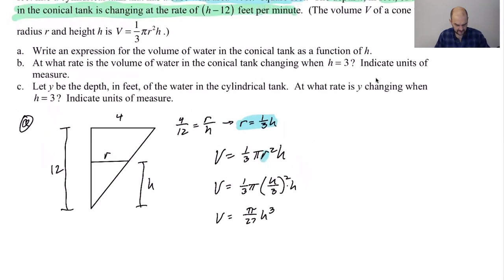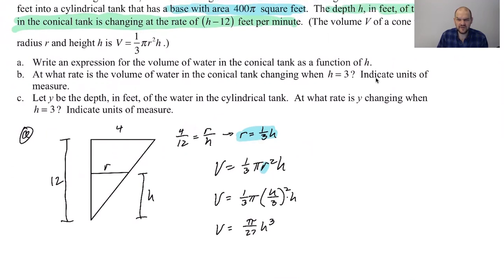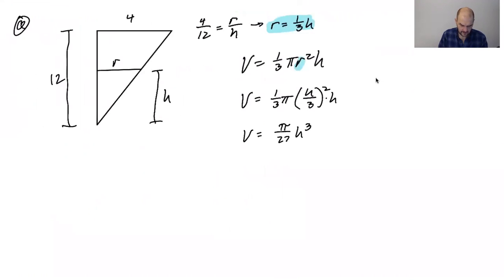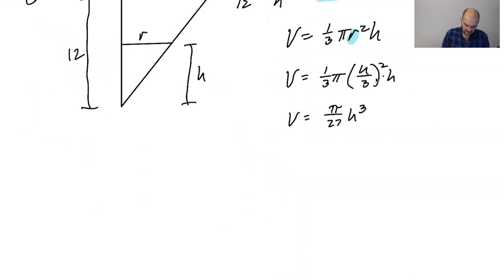There you go. I think that's my answer to A, which is like an algebra, maybe algebra one question. At what rate is the volume of water in the conical tank changing when H equals three? So this question is really basically saying, find dV/dt when H equals three.